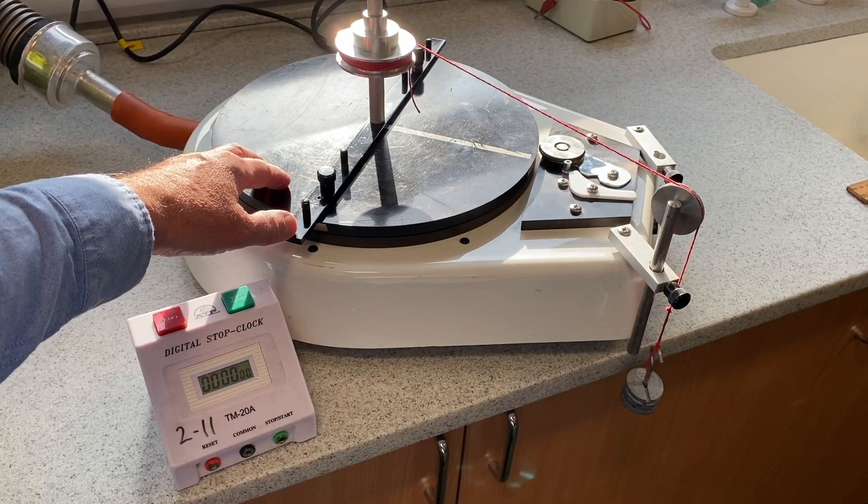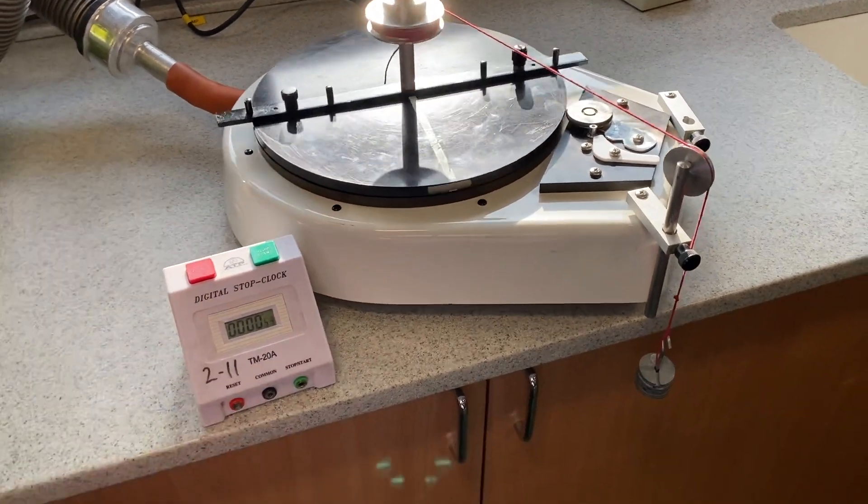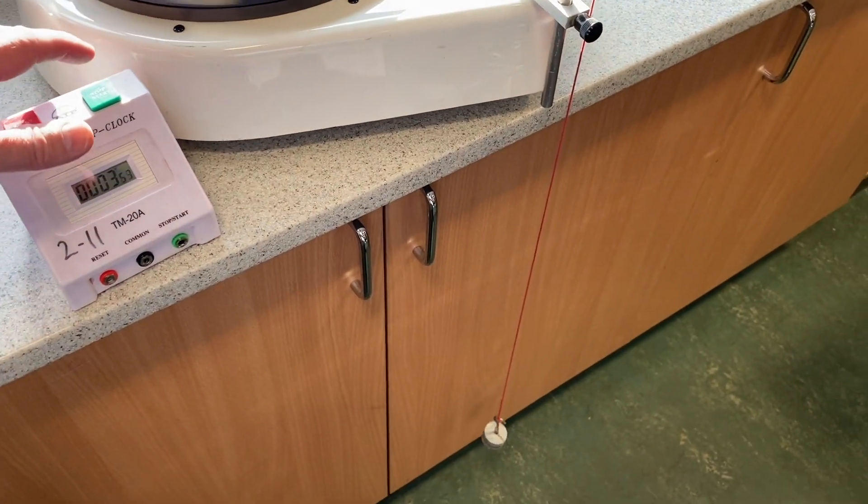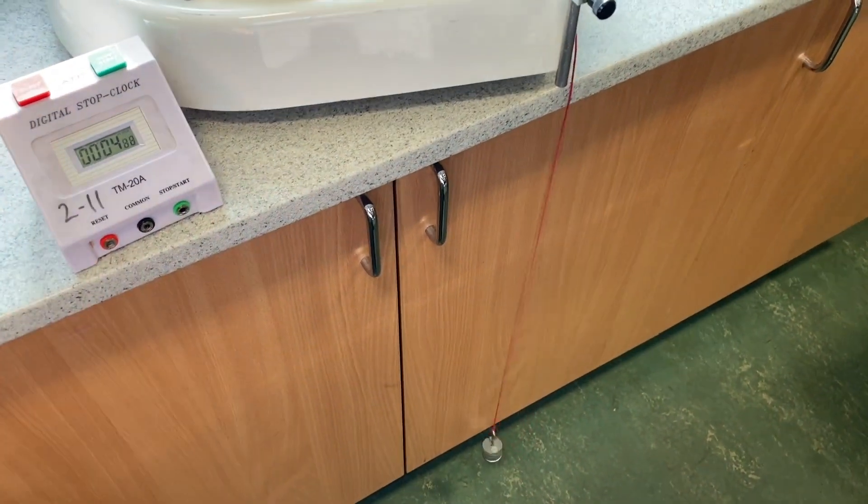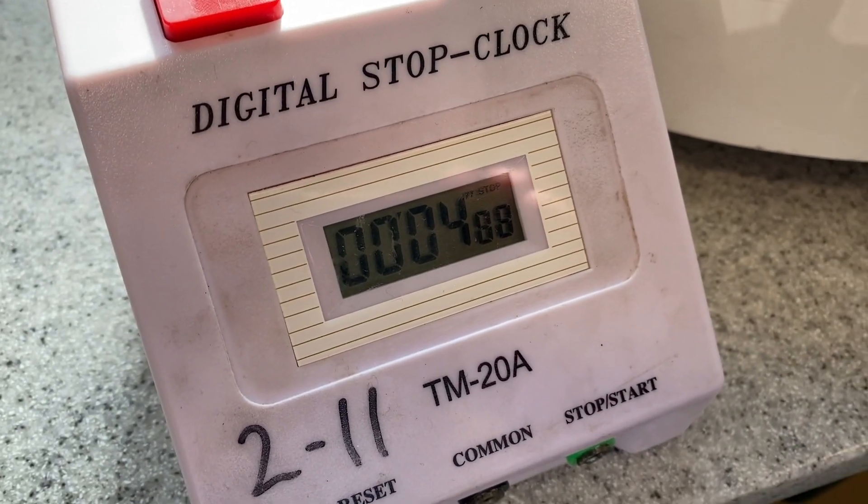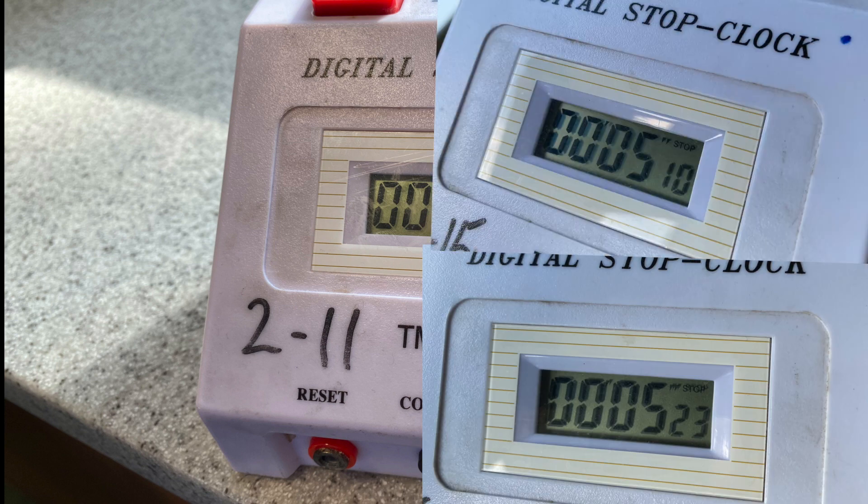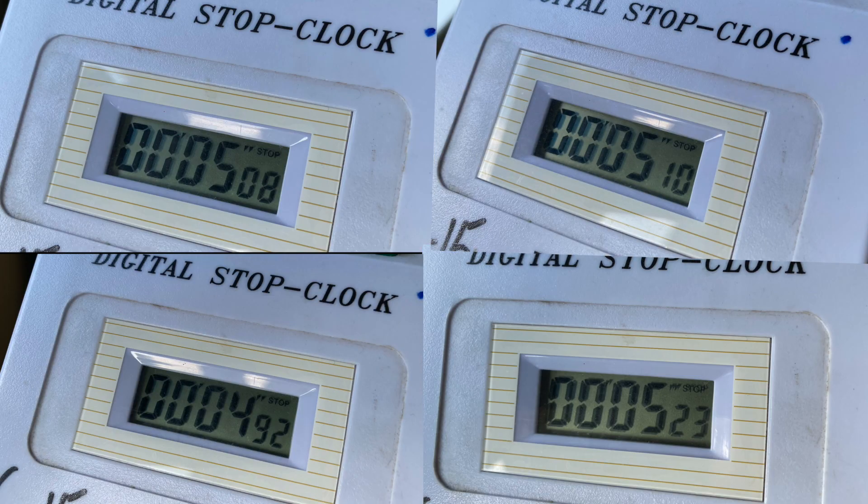Here we go. We're going to let it go and start the stop clock at exactly the same moment. And then we'll stop the stop clock when it hits the floor. And we've got a reading of 4.88 seconds. And we're going to repeat it another 4 times. And then find the mean time for it to hit the ground.